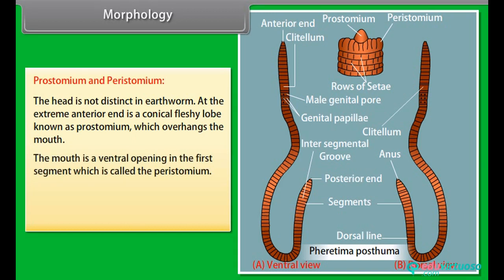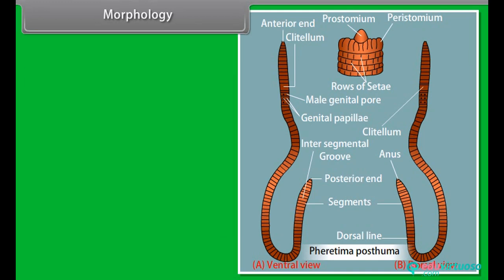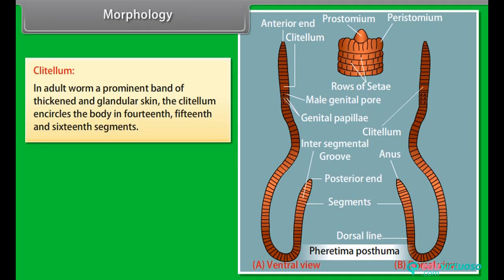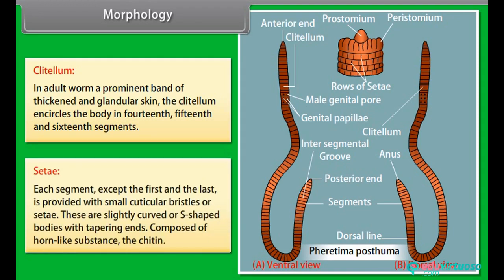The mouth is a ventral opening in the first segment, which is called the peristomium. The prostomium is sensory in function, and with its help the earthworm can discriminate between light and dark. In adult worm, a prominent band of thickened and glandular skin — the clitellum — encircles the body in the 14th, 15th and 16th segments. Each segment except the first and the last is provided with small cuticular bristles or setae, which are slightly curved or S-shaped bodies with tapering ends, composed of chitin.